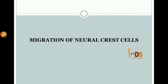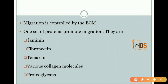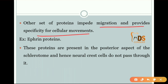Coming to the migration of neural crest cells: migration is controlled by proteins which promote migration, including laminin, fibronectin, tenascin, various collagen molecules, and proteoglycans. Another set of proteins will inhibit migration and provide specificity for cellular movements — for example, ephrin proteins. These ephrin proteins are present in the posterior aspect of the sclerotome, and hence the neural crest cells cannot pass through that region.